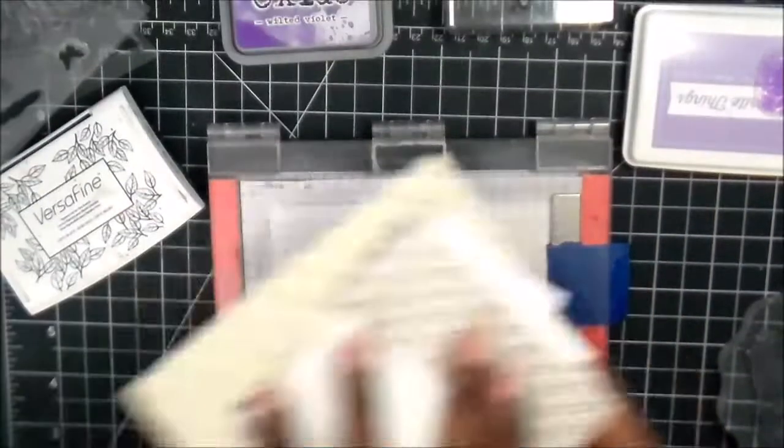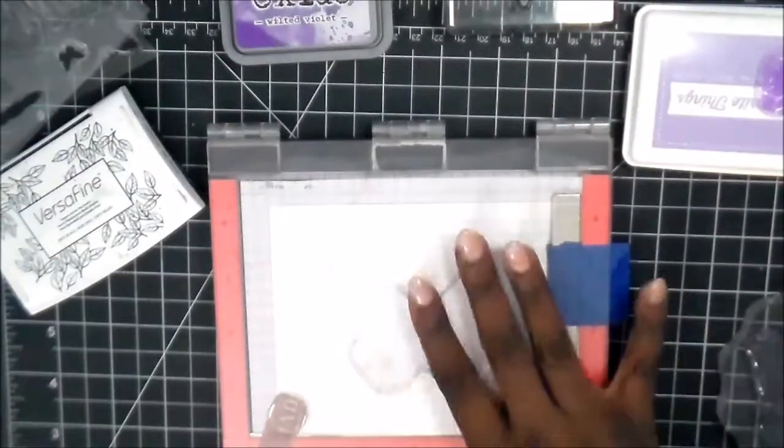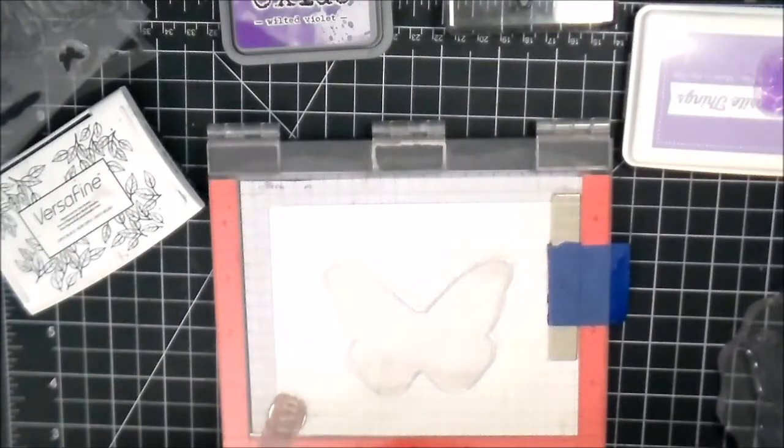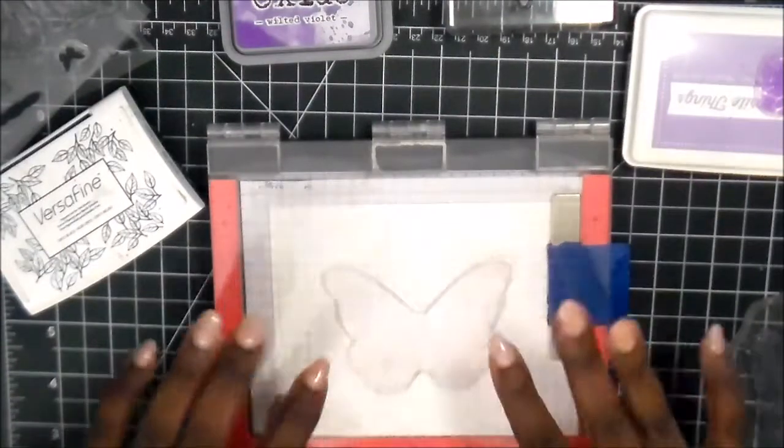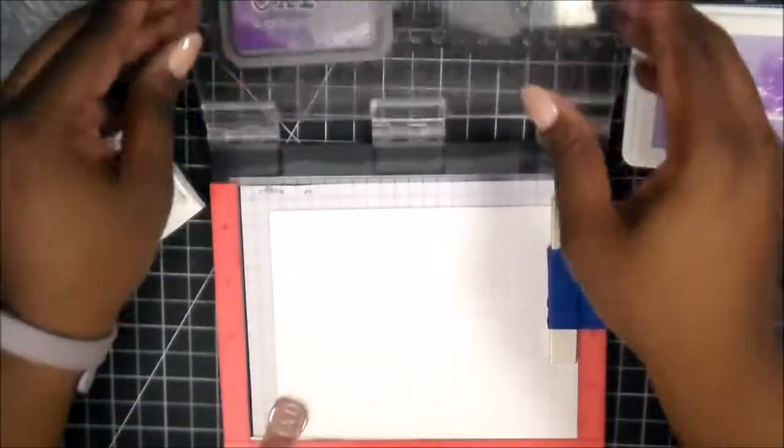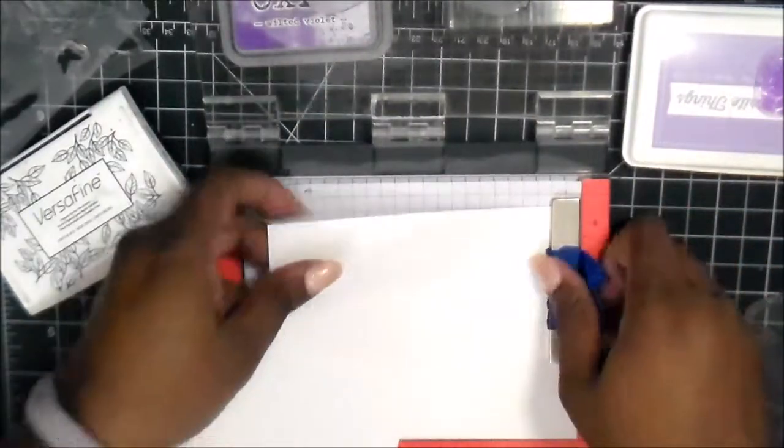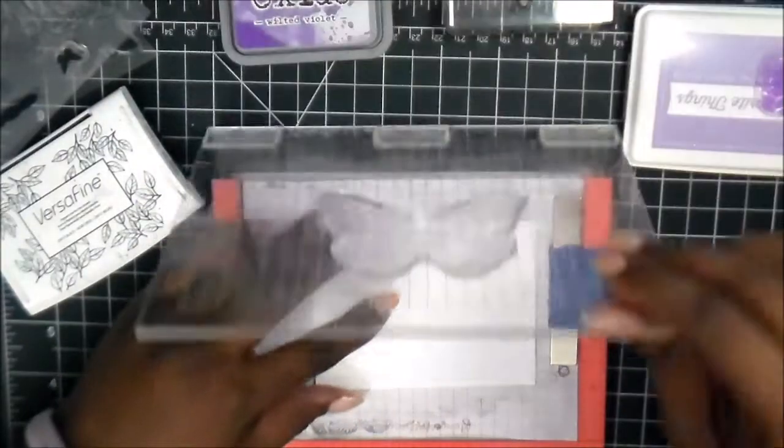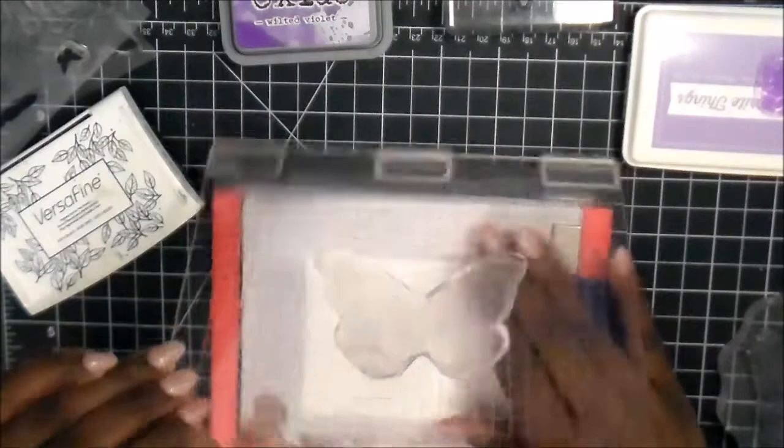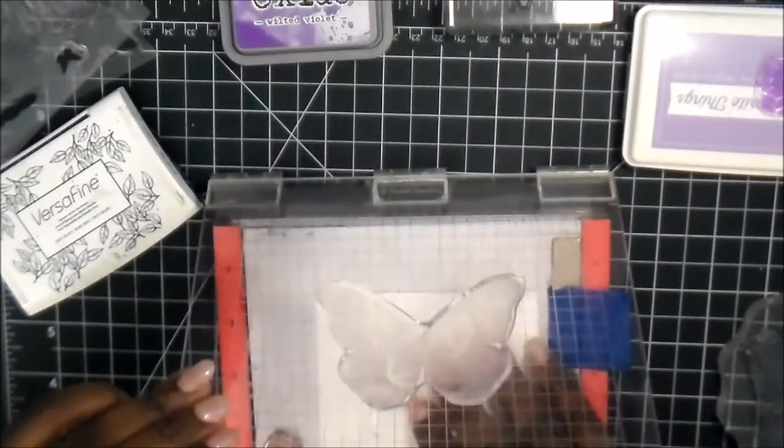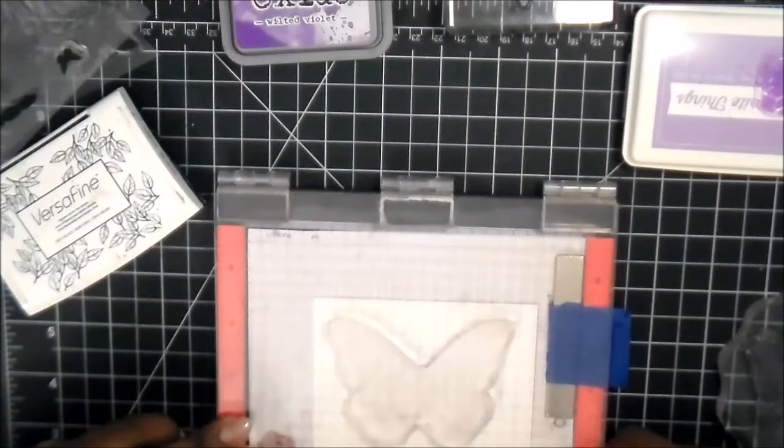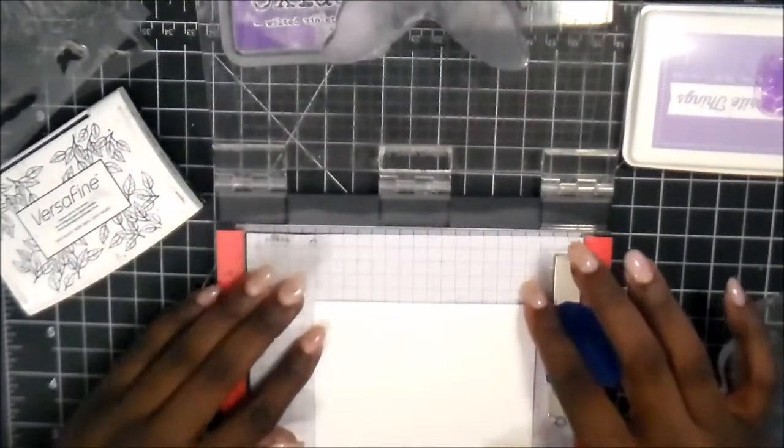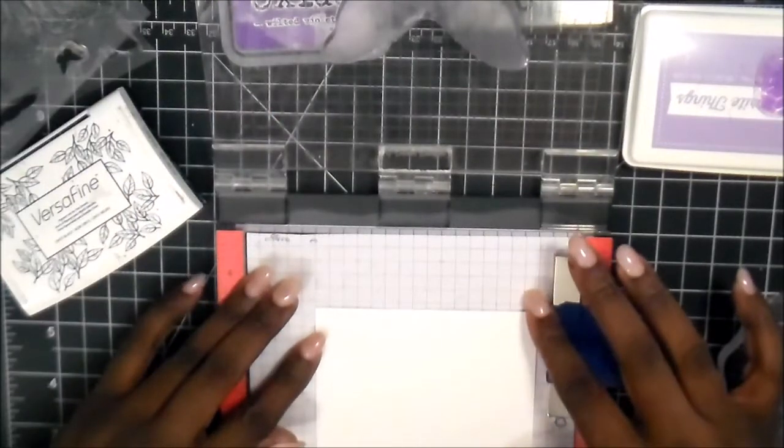So to start off, I already cut my paper. Pretty much the sizes are, the base piece is 4 1/8 by 5 3/8, and then the two smaller cards are 2 1/2 by 3, and my little strip that goes across the middle, I cut it at I think it's 1 1/2 by 4 1/8.